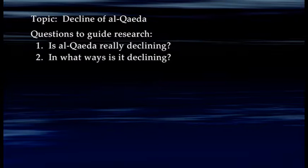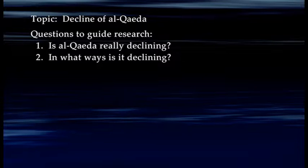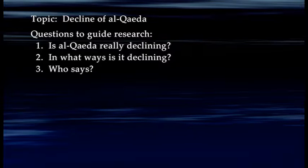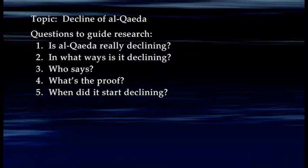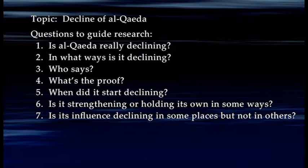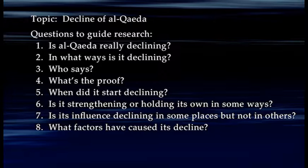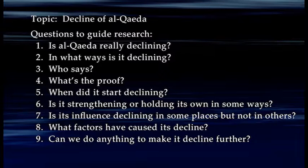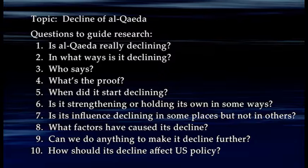Following that: in what ways is Al-Qaeda declining? Number three: who says that this decline is taking place — is this coming from the American intelligence establishment, the military, or from our allies? Number four: what's the proof? How do we measure its decline? Number five: when did it start declining? Number six: are there ways in which it's growing stronger or at least holding its own? Is its influence declining in some places but not in others? And if it is declining, what has caused that? Can we do anything to make it decline further? And how should its decline affect U.S. policy?